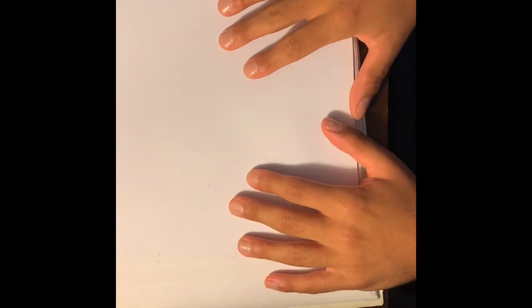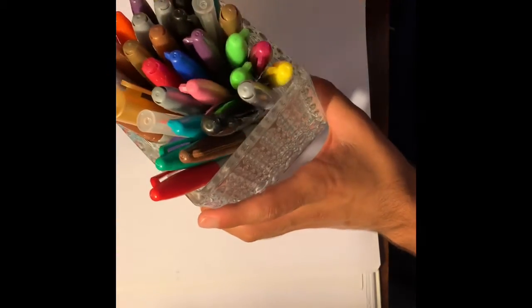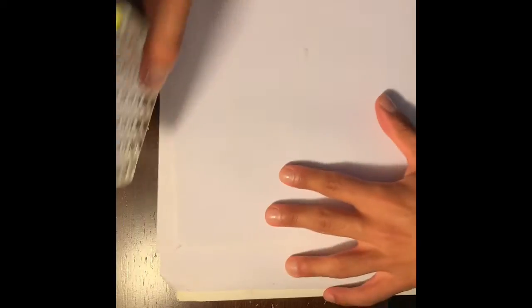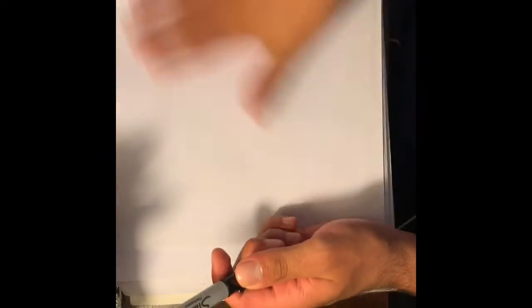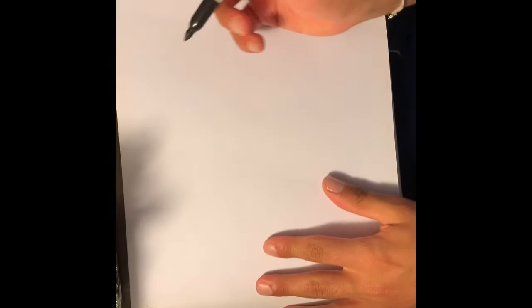Okay everyone, so this is what you're gonna need. You're gonna need some paper and some markers. You can use markers, crayons, colored pencils, anything really. So let's see, we're gonna take our black marker, and we're gonna draw the outline of the fish.